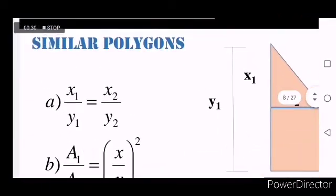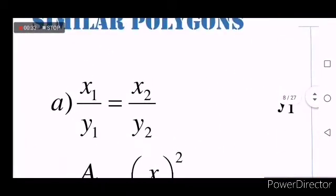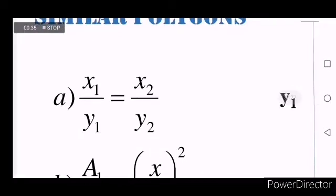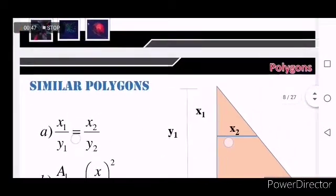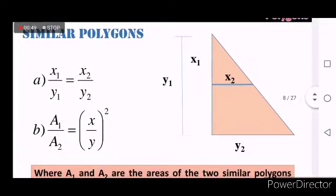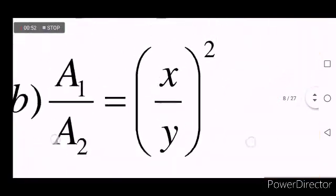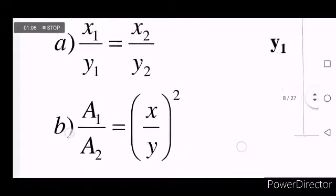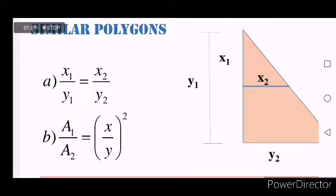If two polygons are similar, their corresponding sides are always proportional. So x sub 1 may represent the smaller and y sub 1 may represent the longer side. For letter b, A sub 1 represents the area of the smaller and A sub 2 represents the area of the larger polygon. Please be reminded that you could manipulate these formulas and recreate your own depending on the value that you needed.